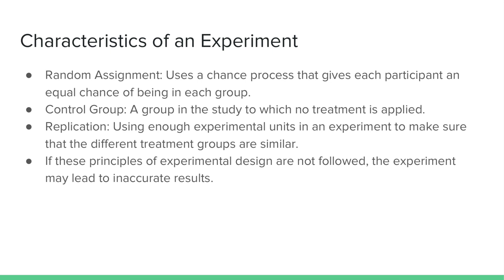Another significant element in a well-designed experiment is using enough experimental units in each group in order to attribute any differences in the response variable or effects of the treatments to the random assignment of treatment groups. This principle, known as replication, ensures that the effects of chance balance out and that the results are reliable.